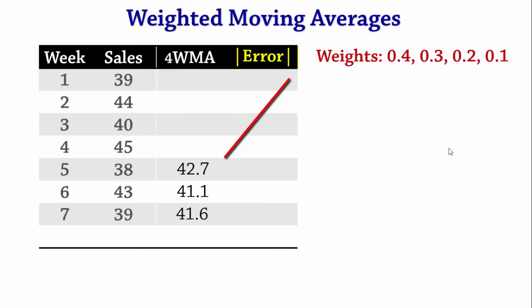There are no errors for weeks 1 to 4 because there are no forecasts. For week 5, the absolute error is 4.7. For week 6, it is 1.9. For week 7, it is 2.6. The Mean Absolute Deviation, MAD, is the average of these errors, which gives 3.07.